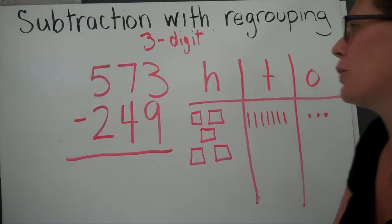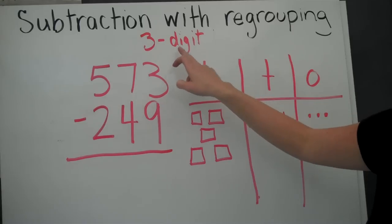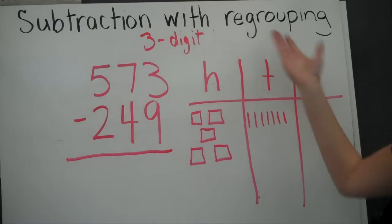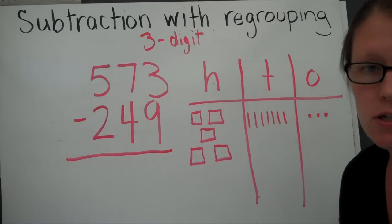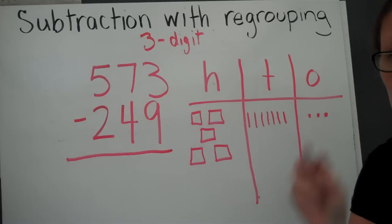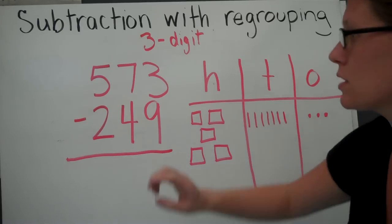In today's lesson, we're going to be talking about three-digit subtraction with regrouping. Just like what we did yesterday, but instead of having two digits, today we're going to have three digits.